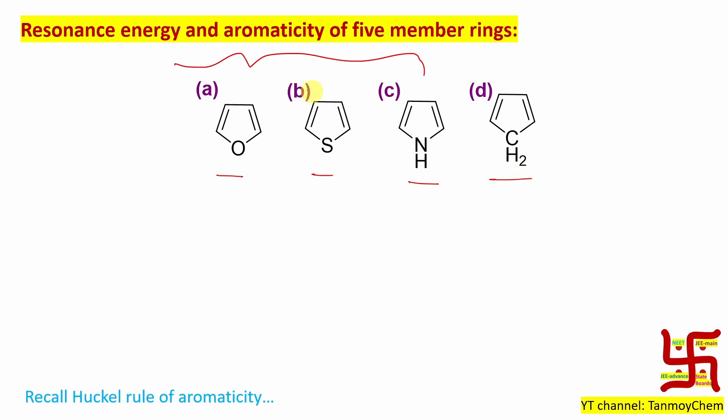If you look at resonance energy in cyclopentadiene, this carbon is actually sp3 hybridized, so it doesn't have any p orbital.